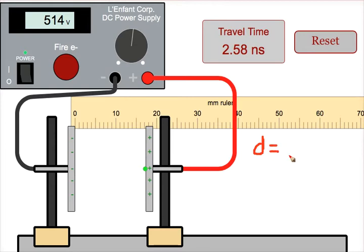In this case, it looks like it's about 17 millimeters, or 0.017 meters. The initial speed of the electron was zero. The final speed of the electron is something we'd like to determine.